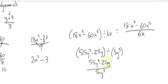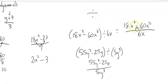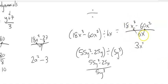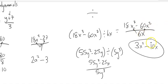Fractions are just division. You can see it in the division sign — this first thing divided by that second thing. So for (18x³ − 60x) divided by 6x, both pieces are divided by 6x. 18x³ over 6x: 18 divided by 6 is 3, x³ divided by x is x², minus 60x divided by 6x: 60 divided by 6 is 10, x divided by x is 1, giving 3x² − 10.